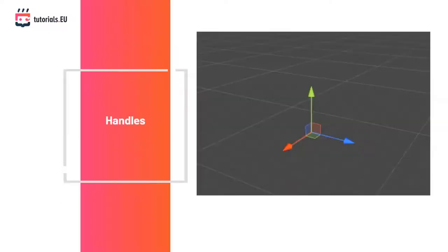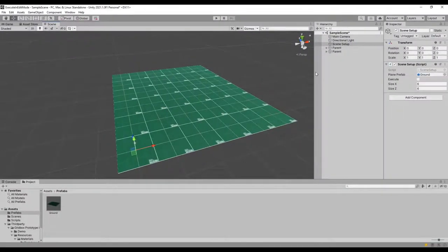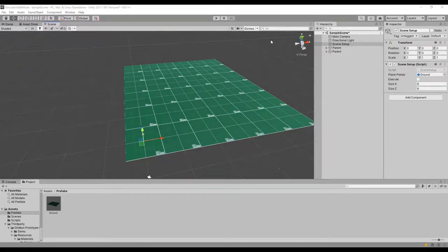We've actually been using handles in Unity the whole time. If we create and select an empty game object in the scene, we'll see Unity handles in action. The arrows we use to edit the position of game objects are called handles. Unity also uses handles to allow us to edit other components like colliders. To create our own components modifiable with handles, we need to create an editor script.